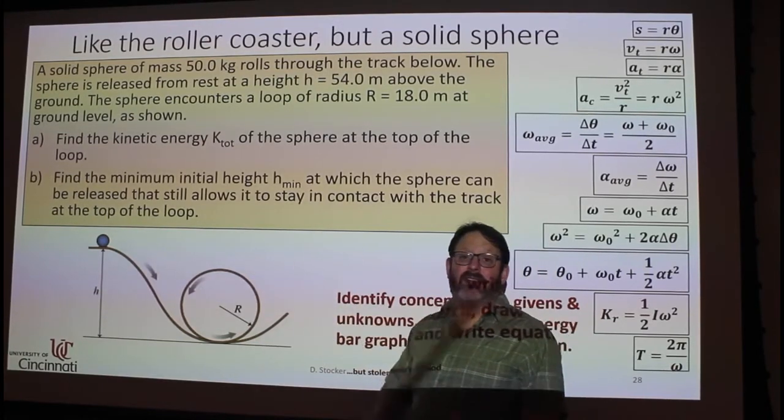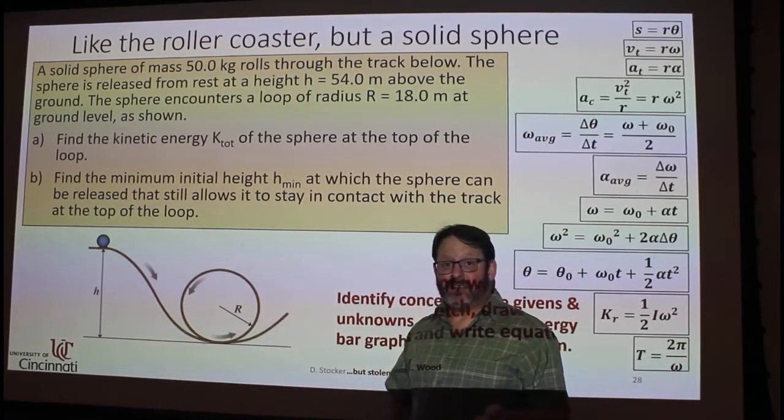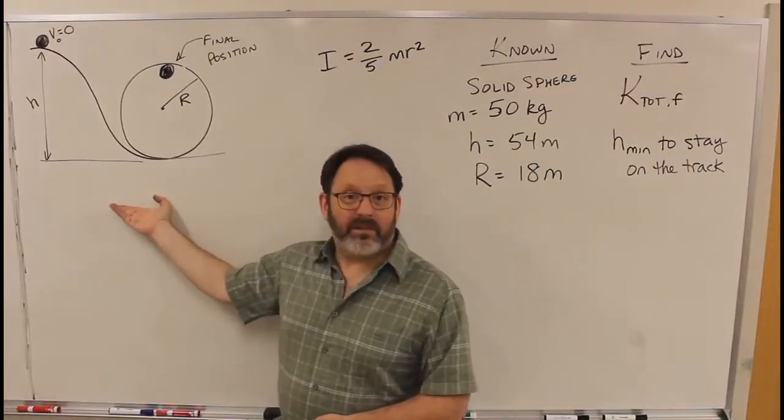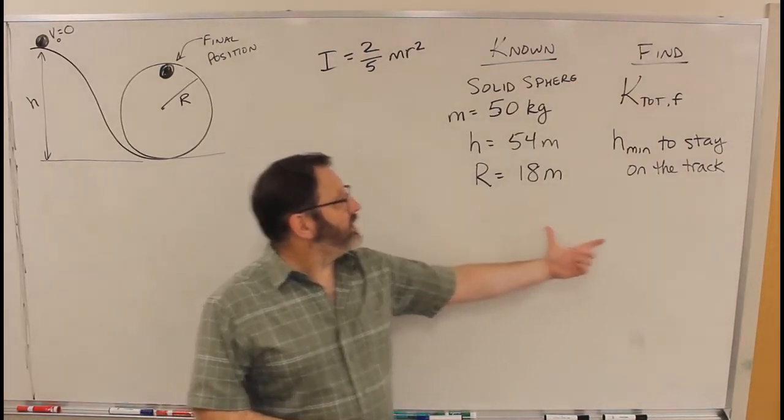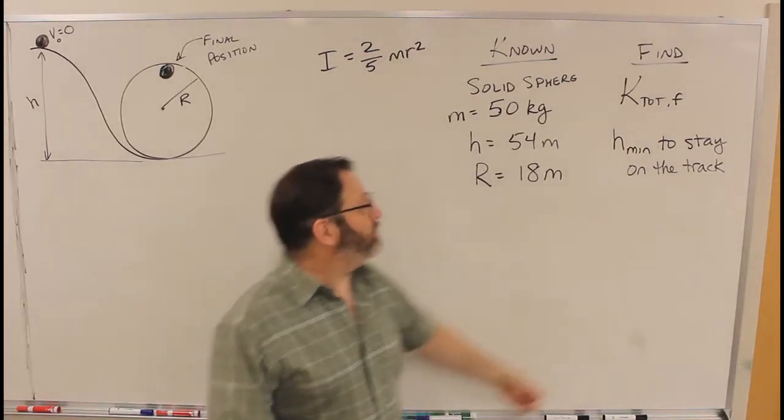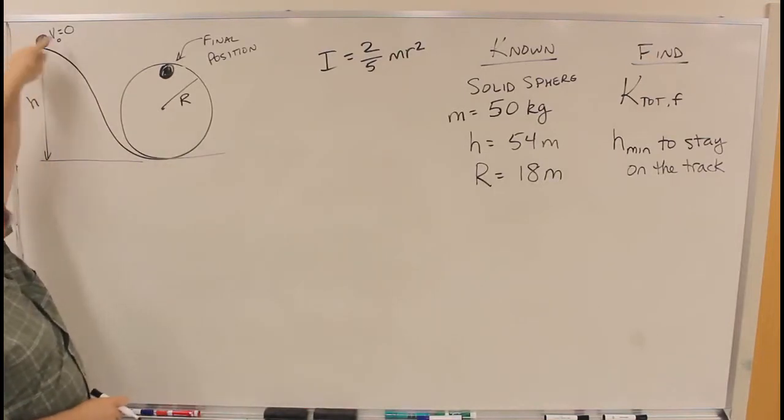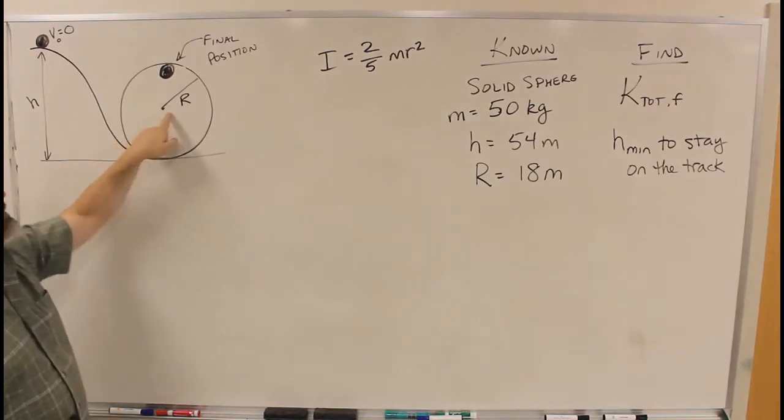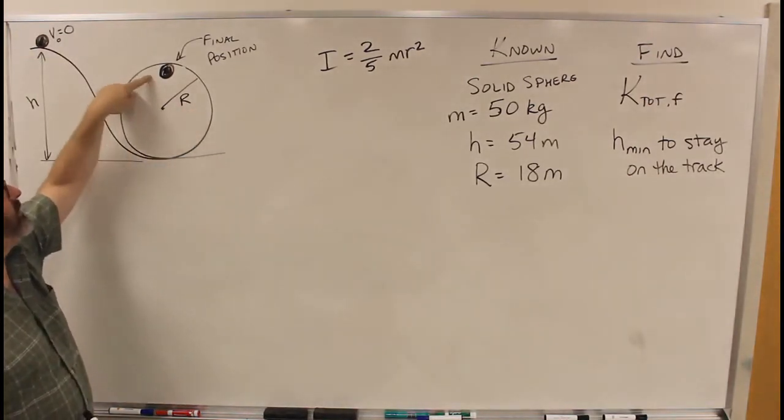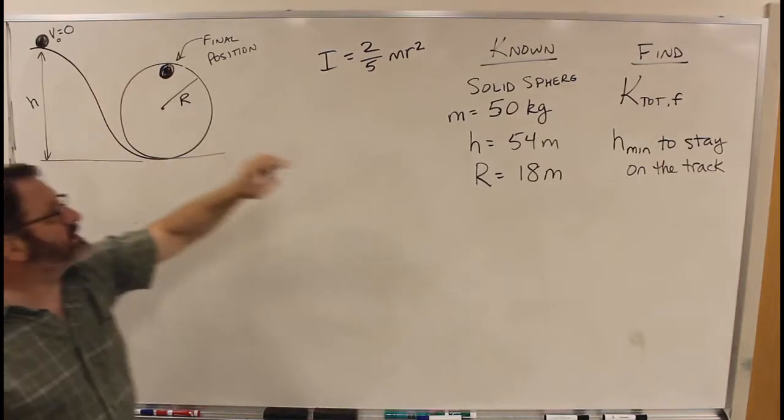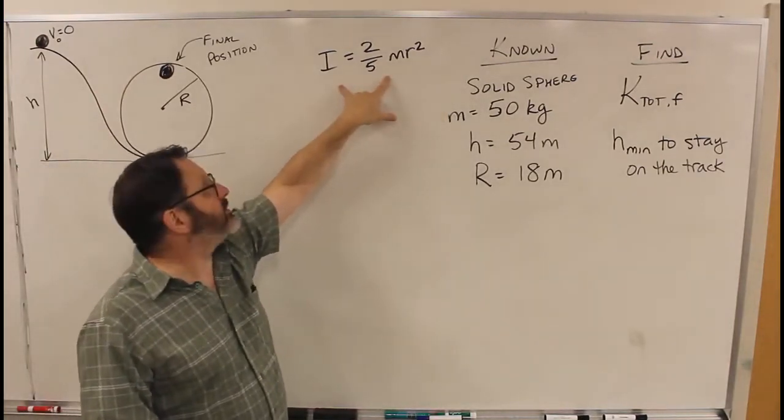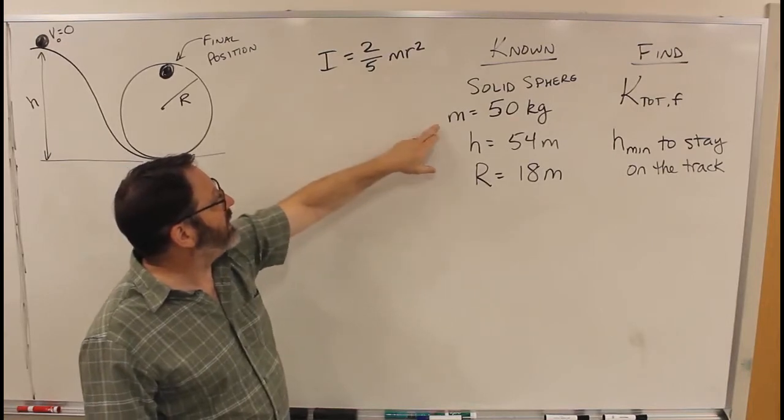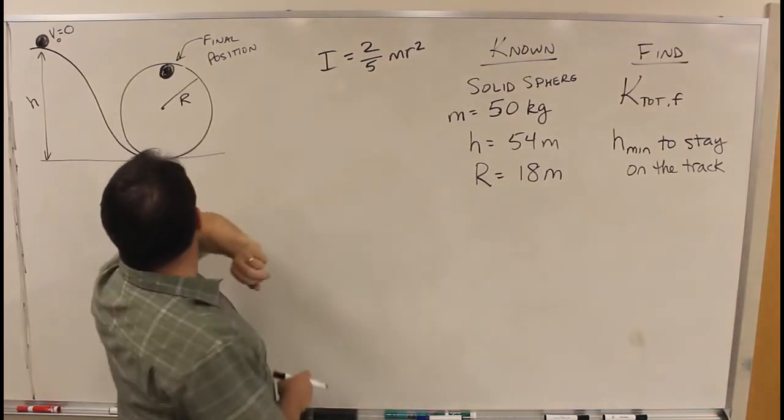And so now we have to take into account rotational kinetic energy as well. So again, I've started out by drawing the scenario here and I've put our knowns and our unknowns that we're looking for. So the sphere starts here, V naught equals zero, rolls down through this circular part with radius capital R into this final position. It's a solid sphere, so I've put the moment of inertia of a solid sphere here, figuring we'll probably need that. We've got M of the sphere, we've got the height, we've got R.